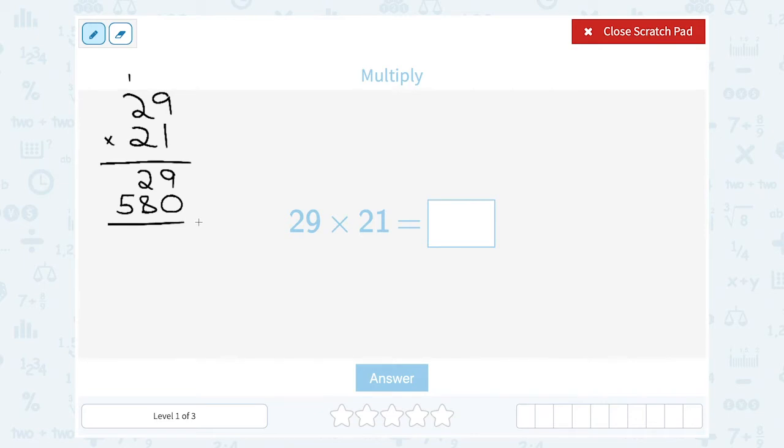So notice the way that this works. This is 1 times 29, right, gave us 29. And 20 times 29 gave us 580. Well, 1 and 20 together make up 21. So what we need to do is add these two numbers together to get our whole answer for 21 times 29.